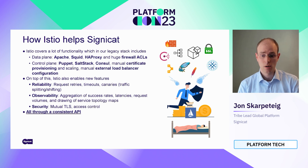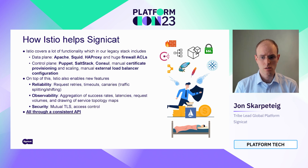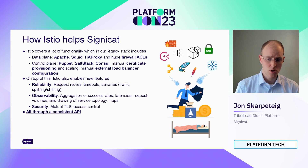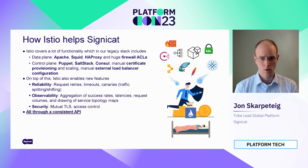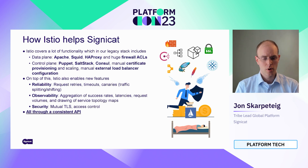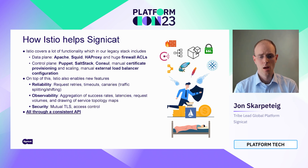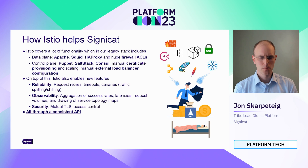So how does Istio help us? It covers a lot of the functionality. SigniCat has been around for some time, so these are not new problems. We have had other solutions in place — things like Squid and ancient proxies, huge ACLs to determine what traffic can go where, and control plane components like Puppet. But at the end of the day, you had manual provisioning of new nodes, new capacity, new certificates, and then you'd roll out a static configuration update. It wasn't really as flexible as we wished it was.